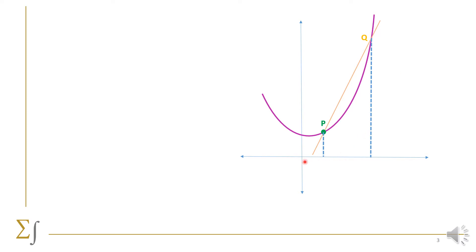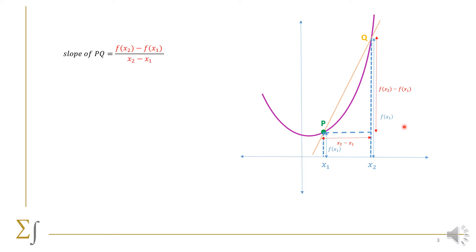Here is x₁, and this is x₂. This height will be f(x₁), and this will be f(x₂). This distance is equal to the difference x₂ minus x₁. The height of the right angle triangle in front of us is f(x₂) minus f(x₁). Now the slope of PQ from the right angle triangle is the rise over the run, so we have f(x₂) minus f(x₁) over x₂ minus x₁, which gives us the slope of PQ.